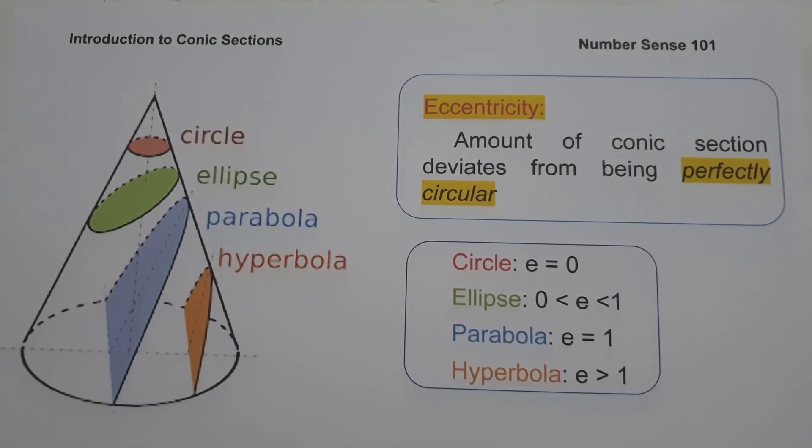Conic sections can also be described using a parameter called eccentricity, which is the amount a conic section deviates from being perfectly circular. For a circle, the eccentricity is zero. For an ellipse, it's between zero and one. For a parabola, it's precisely one. And for a hyperbola, it's greater than one.